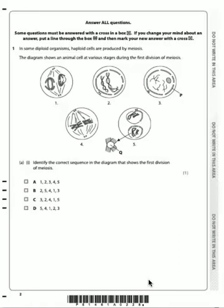The diagram shows an animal cell at various stages during the first division of meiosis — and that's because meiosis has two divisions, which is why they specified the first division. The question asks us to identify the correct sequence in the diagram that shows the first division of meiosis.